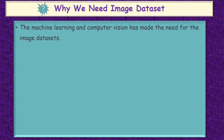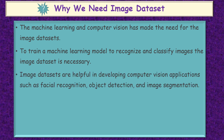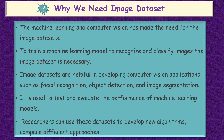Next, we look upon why we need image datasets. Machine learning and computer vision have made the need for image datasets. To train a machine learning model to recognize and classify images, the image dataset is necessary. Image datasets are helpful in developing computer vision applications such as facial recognition, object detection, and image recognition. They are also used to test and evaluate the performance of machine learning models, and researchers can use these datasets to develop new algorithms and compare different approaches.